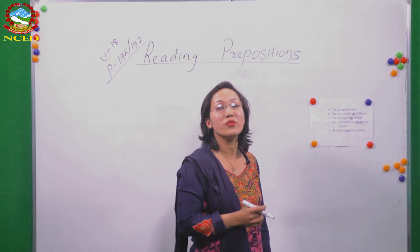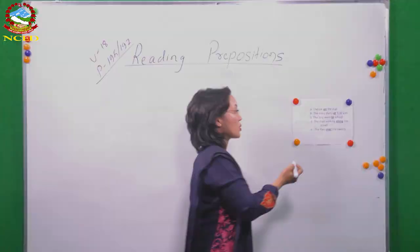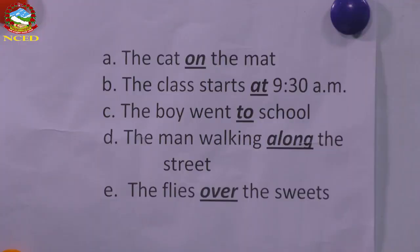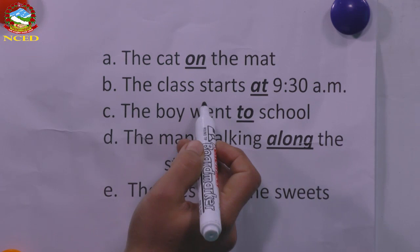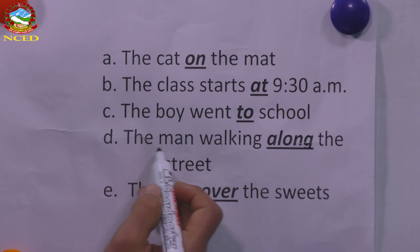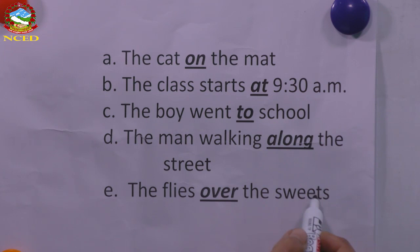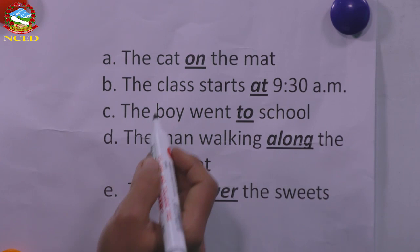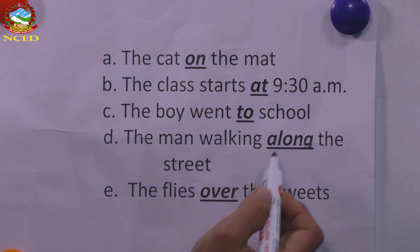Before we get started, I'd like to show you a couple of sentences where you have to identify the prepositions. A cat on the mat. The class starts at 9.30 a.m. The boy went to school. A man is walking along the street. The fly goes over the suits. So the words made bold — on, at, to, along, over — these all are prepositions.